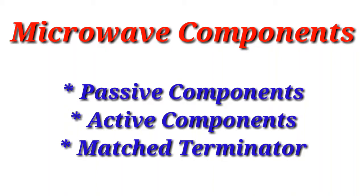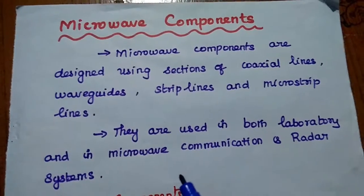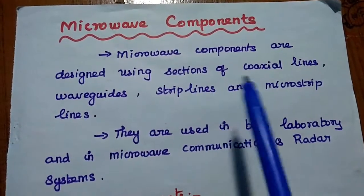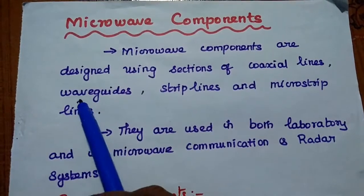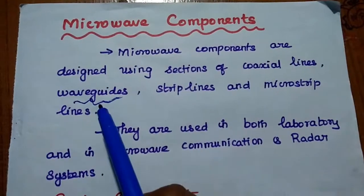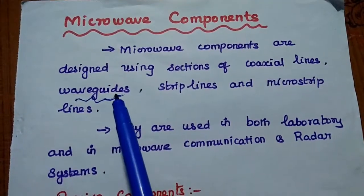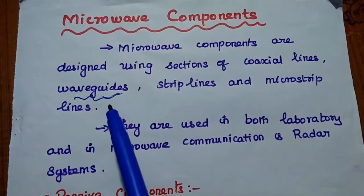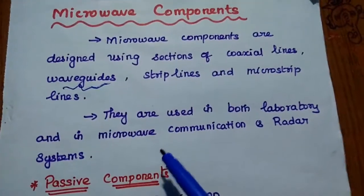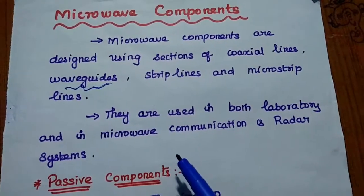We are going to discuss microwave components and matched terminator. Microwave components are very high frequency components made up of sections of coaxial lines, waveguides, strip lines, and microstrip lines. Especially, microwave components are made up of waveguides. A waveguide is simply a hollow metallic tube used to guide microwaves from one place to another. These microwave components are used in both laboratory and microwave communication and radar systems.